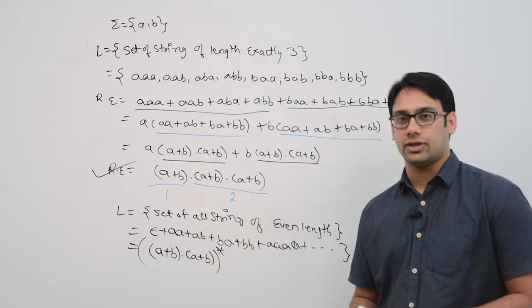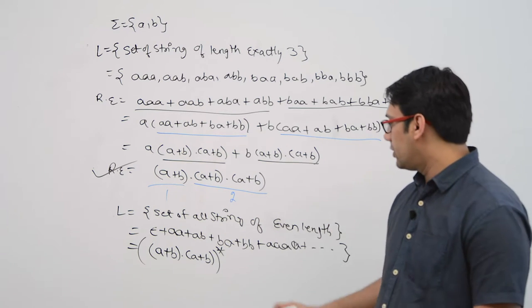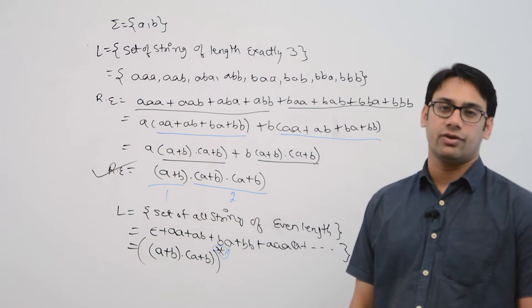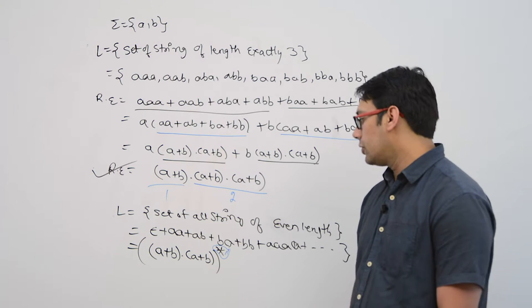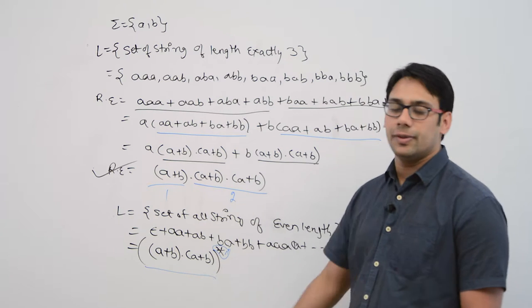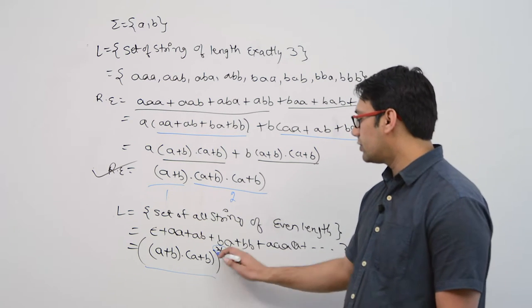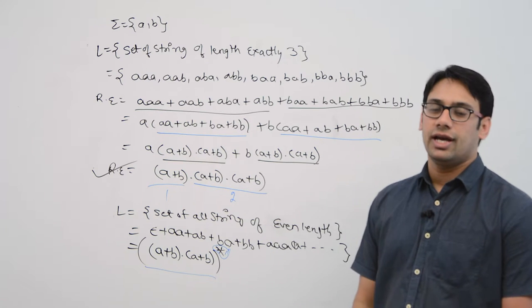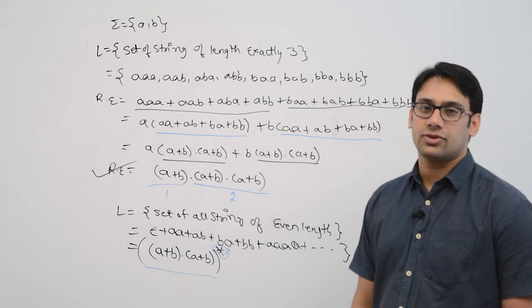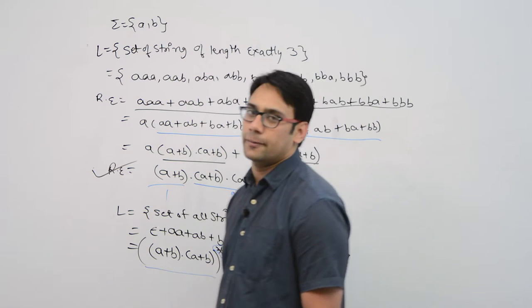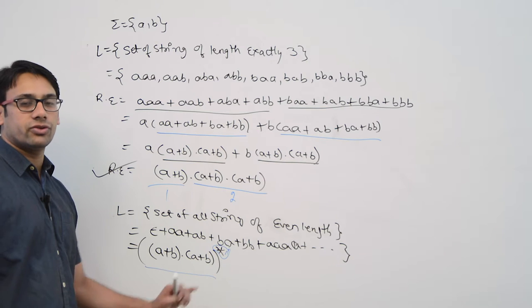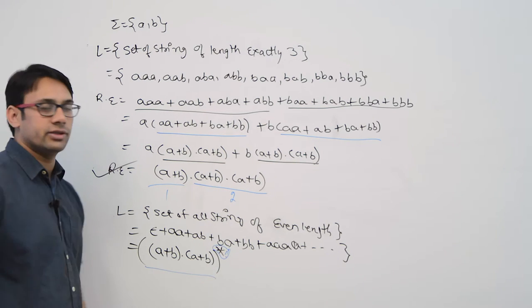When we apply the closure, it means the expression can be raised to power 0, 1, 2, 3, 4, and so on. Power 0 gives epsilon (length 0), power 1 gives strings of length 2, power 2 gives strings of length 4, and so on. So ((a+b)(a+b))* generates strings of length 0, 2, 4, 6, and so on — all even-length strings.